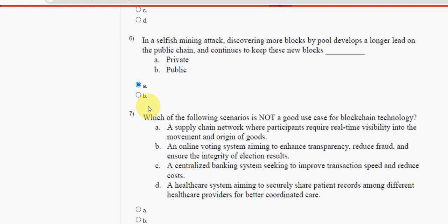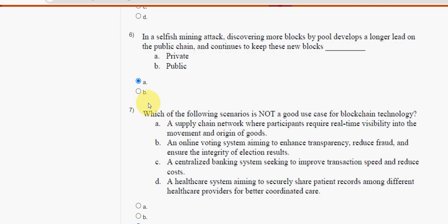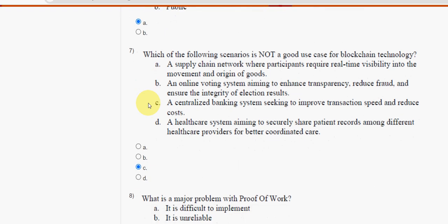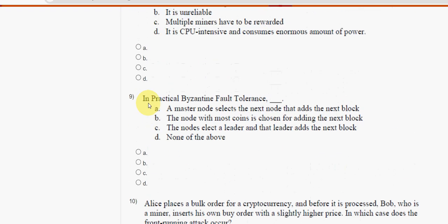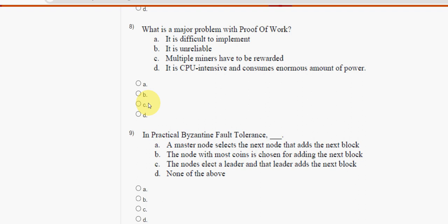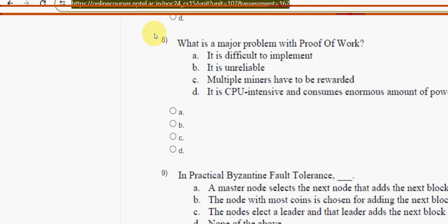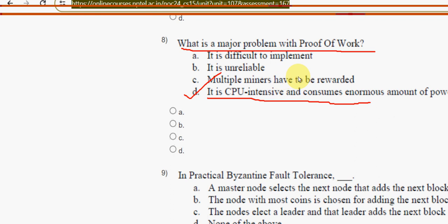Eighth question: what is a major problem with proof of work? The answer is option D — it is CPU intensive and consumes a large amount of power. Mark option D.